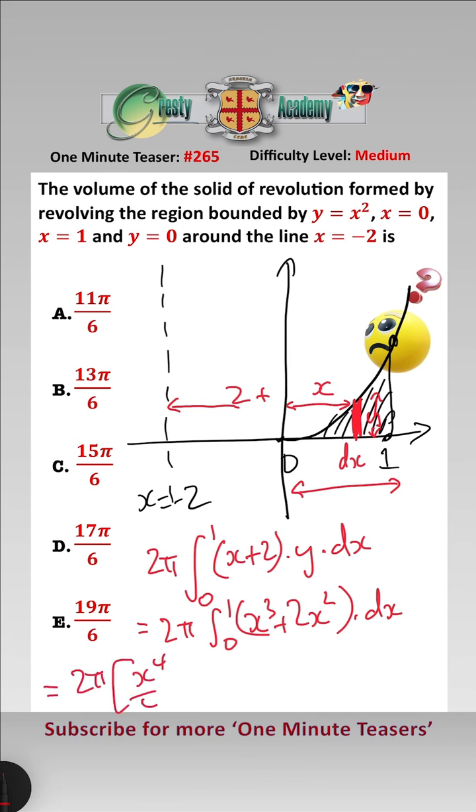x to the 4 over 4, add 2x cubed over 3, between 0 and 1, and that equals 2 pi, a quarter, add 2 thirds, which equals 11 pi over 6, which is answer A.